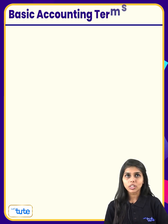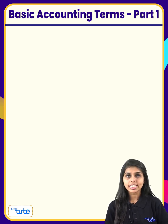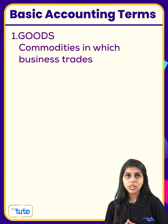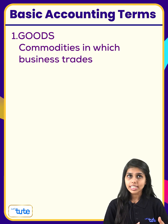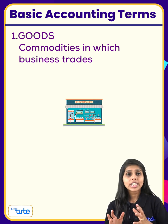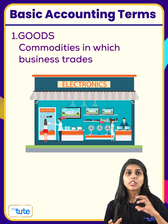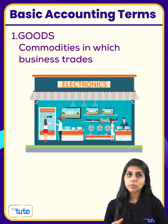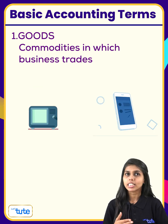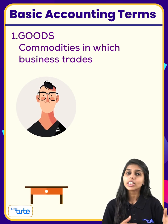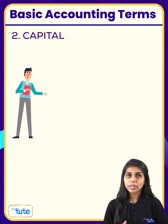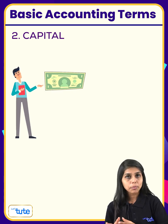Let's understand some basic accounting terminologies. First, goods — these are the commodities or things in which a business trades. For example, for an electronic item dealer, TV and mobile are goods; for a furniture dealer, furniture is goods. Next, capital — it is the amount invested by the owner into the business.